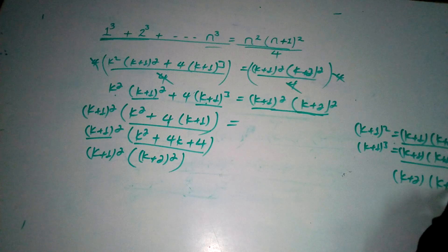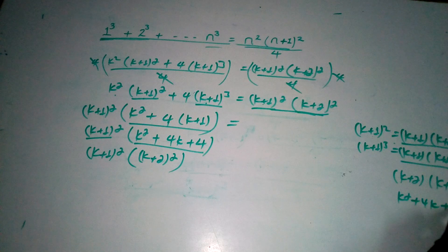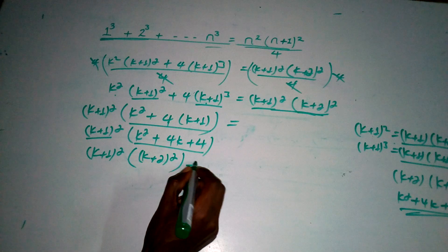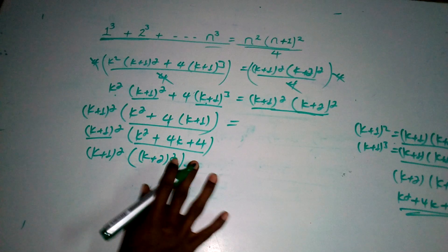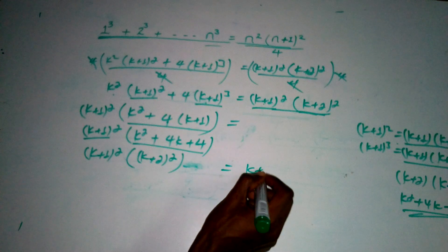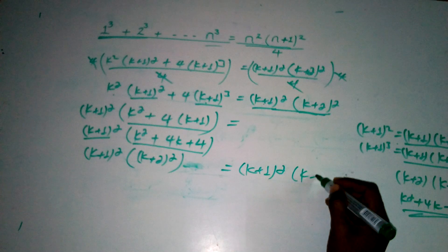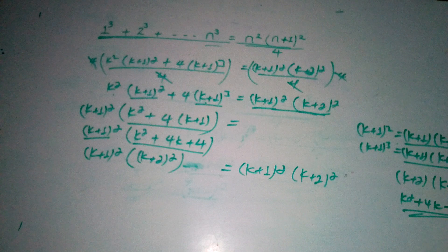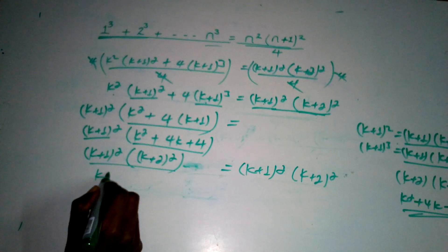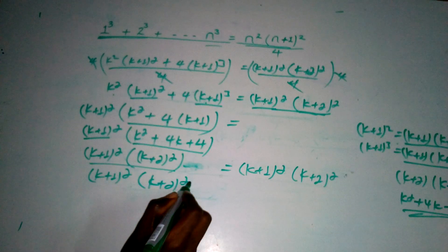k plus 2 times k plus 2 gives k square plus 2k plus 2k plus 4, which is k square plus 4k plus 4. So k plus 1 the whole square times k plus 2 the whole square equals k plus 1 the whole square times k plus 2 the whole square.